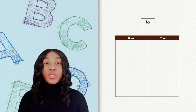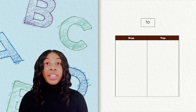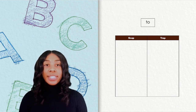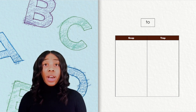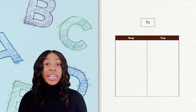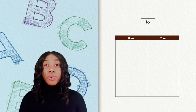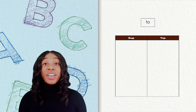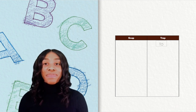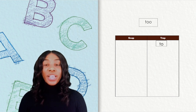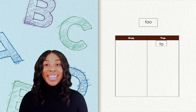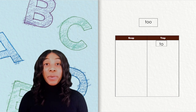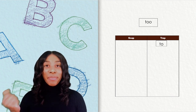Our first word is two. In this word, we hear the ooh sound at the end, but we only see one O, and we know if we hear ooh it can be spelled O-O or U-E. So this word does not play fair and it goes in our track column. Our next word is too. We hear the ooh sound at the end again, and here is the O-O that we have been talking about. This word plays fair, so it goes in our snap column.